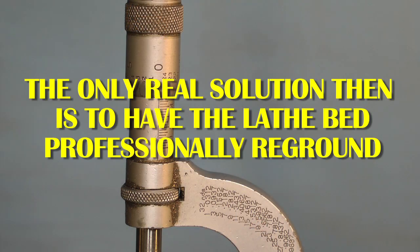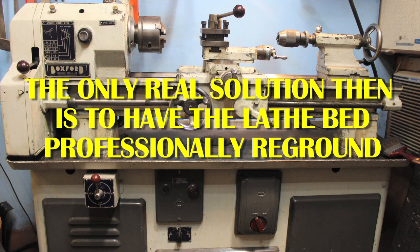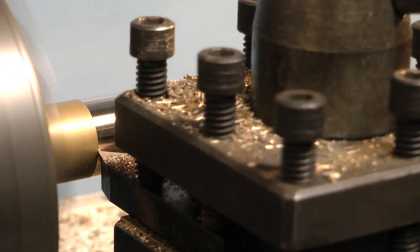As I mentioned earlier, this old Boxford of mine is very accurate, so it doesn't need any attention, but if you find by using a test bar you have errors between the two ends of the bar, therefore you will be turning a taper, you need to do something about it.